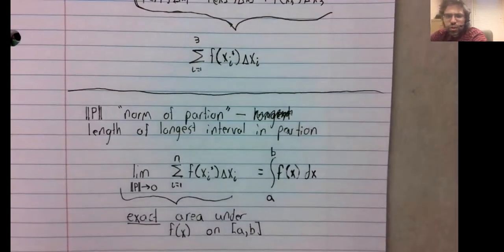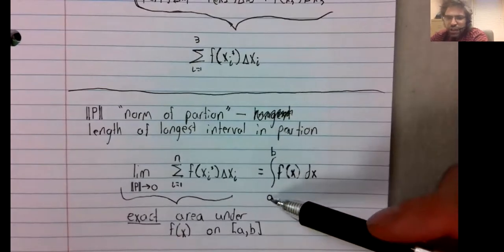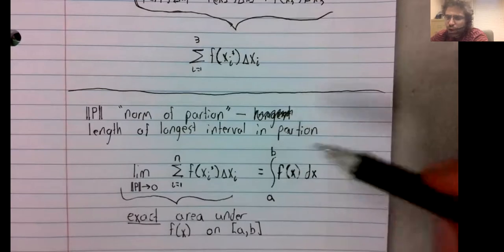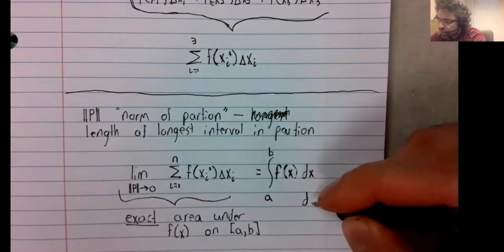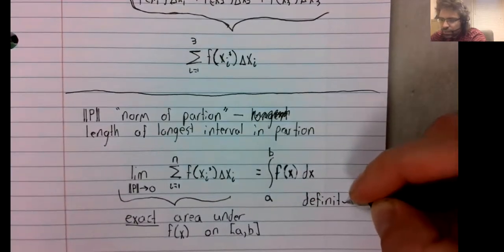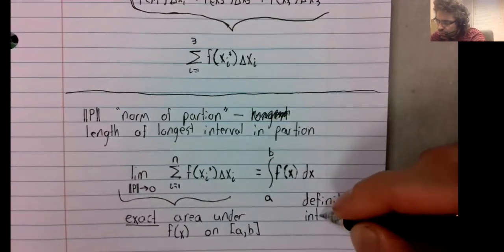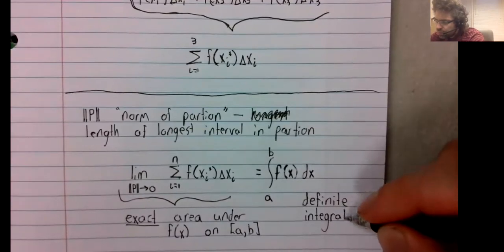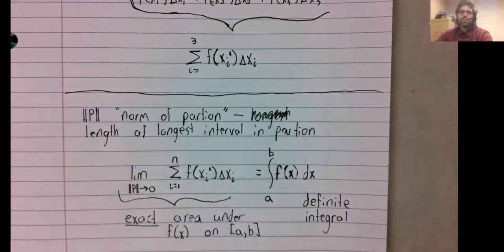It's the notation of the indefinite integral, except we have a number down here and a number up here. And the name, it is called the definite integral. About half of calculus two is going to be spent studying the definite integral. In spite of its rather contorted definition, it is one of the truly major objects of study in calculus.